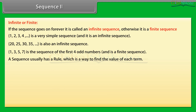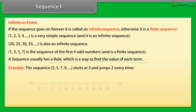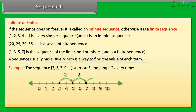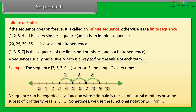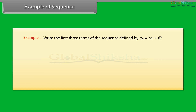A sequence usually has a rule, which is a way to find the value of each term. For example, the sequence 3, 5, 7, 9, and so on starts at 3 and jumps by 2 every time. A sequence can be regarded as a function whose domain is the set of natural numbers or some subset of it of the type 1, 2, 3 up to k. Sometimes we use the functional notation a(n).